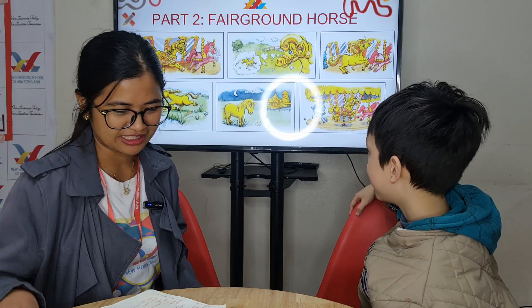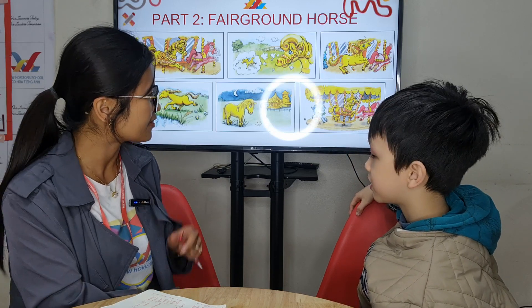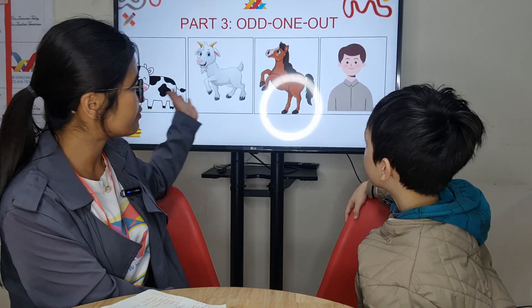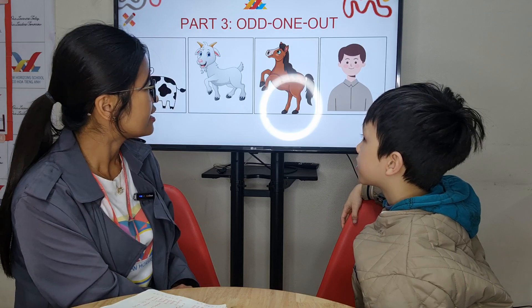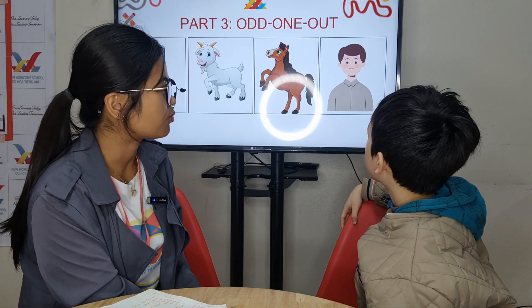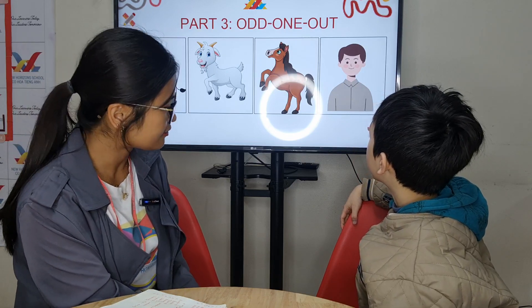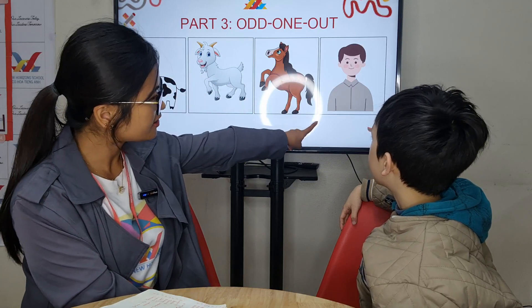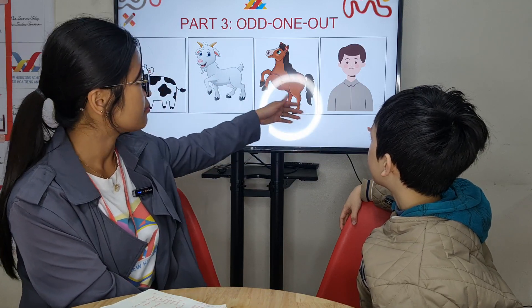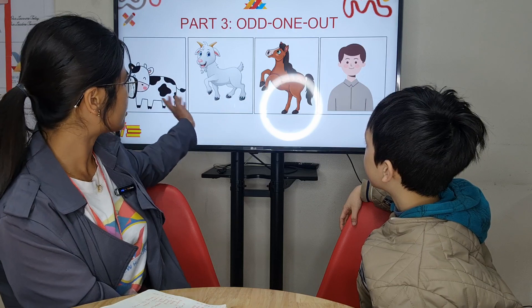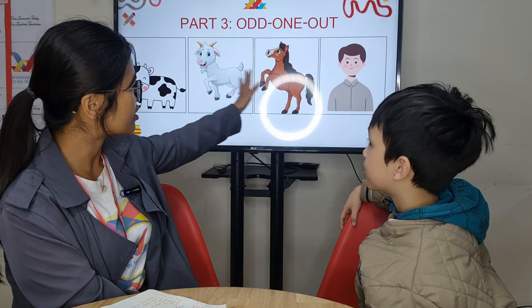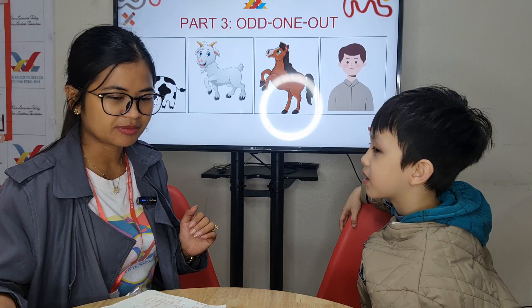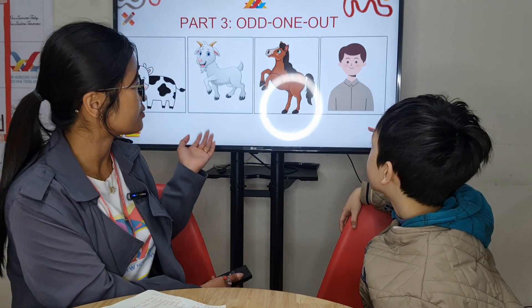Now we've got four pictures. You will tell me which one is different. For example, in this set, man is different. Why? Because horse, goat, and cow — they are animals. Okay, now let's begin. How about this one, Jack — which one is different?